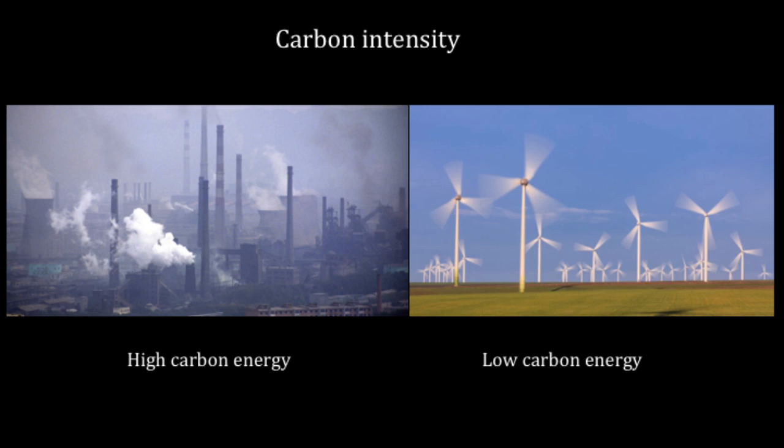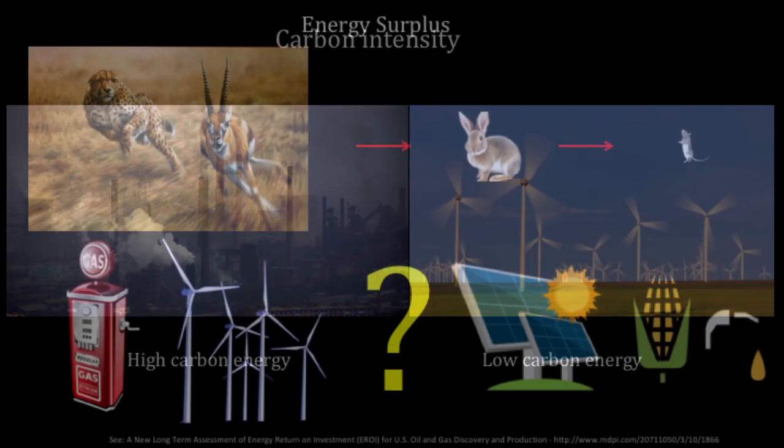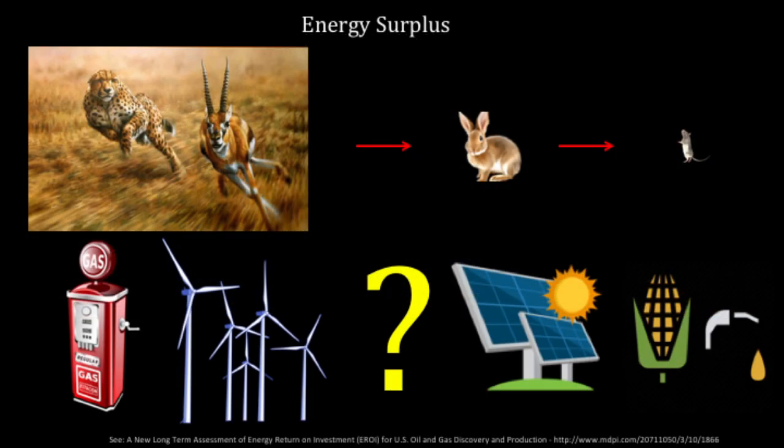Carbon intensity is also a very important energy property. Coal, oil, and natural gas have very high carbon per unit of energy measures, whereas solar and wind have very low carbon in the amount of energy they emit. We as a species cannot continue to burn this amount of energy with this amount of carbon intensity, or our descendants and other species are going to live in a much different, hotter, less habitable world.